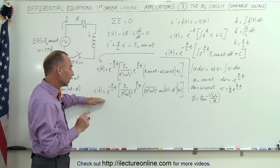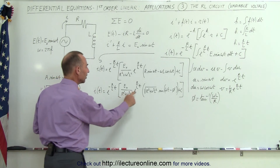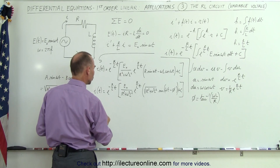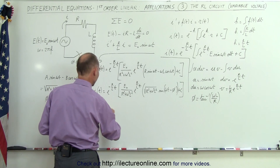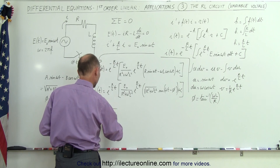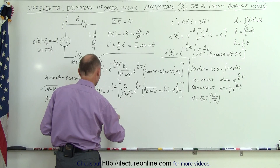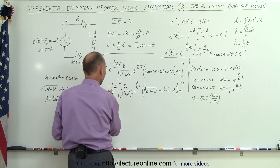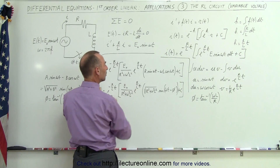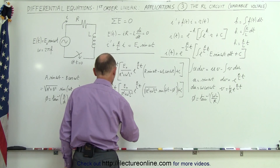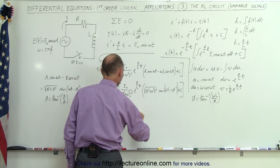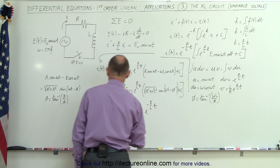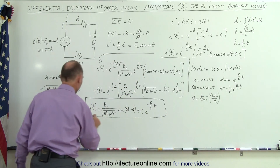Simplifying further by multiplying and dividing the terms, the E to the positive and negative R over L times time exponents cancel each other, giving the general solution: I as a function of time equals E sub-naught divided by the square root of R squared plus omega squared L squared, times the sine of omega t minus the phase angle, plus a constant of integration times E to the minus R over L times time.